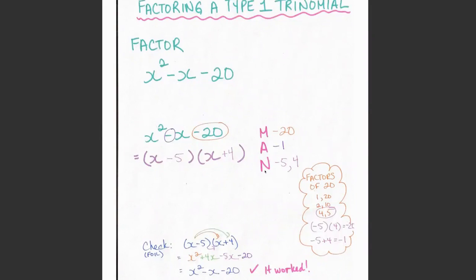I want to look for two numbers that will multiply to this value here, which is -20, my constant term.